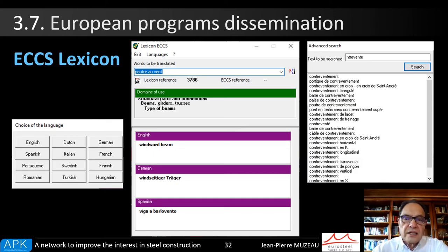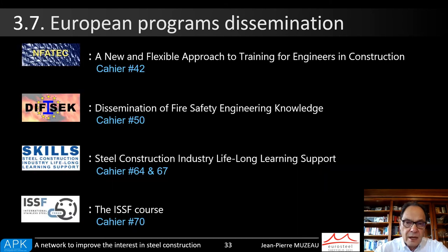The ECCS lexicon was under my responsibility. It contains the translation of 4000 technical terms into 12 languages, and all of these terms have been translated and checked by specialists from each relevant country. The other programs are just named here, but all of them have been disseminated in the Cahiers de l'APK.